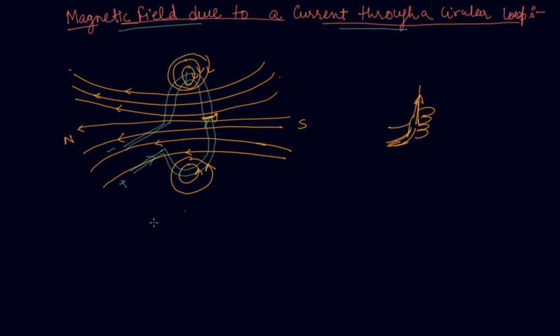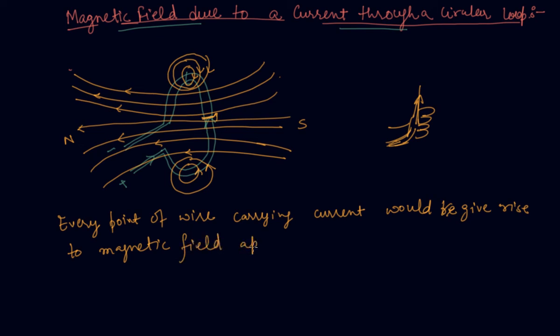Every point of wire carrying current would give rise to the magnetic field appearing as straight line at the center of the loop.